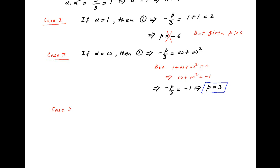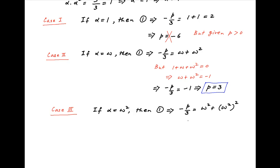In the third case, alpha is equal to omega square, and alpha squared is omega to the power 4. Therefore the sum equation becomes minus p upon 3 is equal to omega square plus omega to the power 4. This can be written as omega square plus omega cube times omega, and since omega cube is equal to 1, the right hand side equals omega plus omega square, which is equal to minus 1. Therefore minus p upon 3 is equal to minus 1, and therefore p is equal to 3.